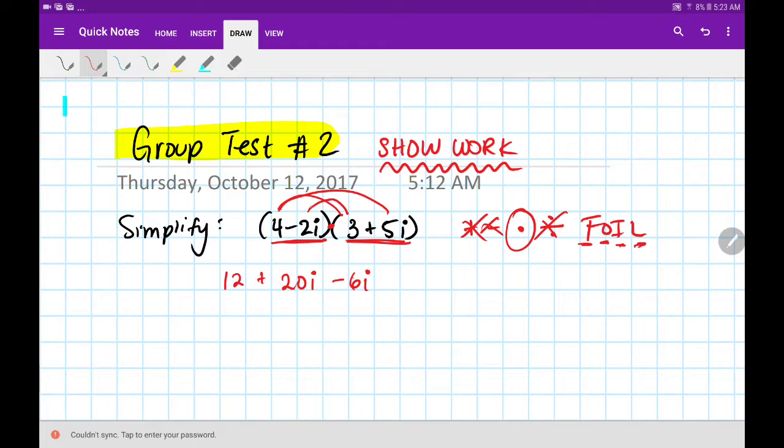Now, we'll do our last terms. Negative two I times positive five I gives me, careful, watch your signs. It's going to be negative ten, and then I times I is I squared.